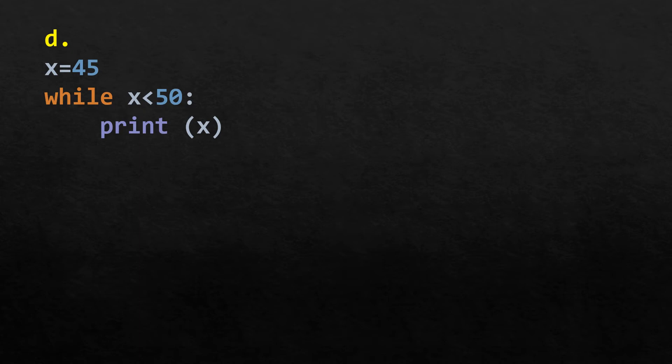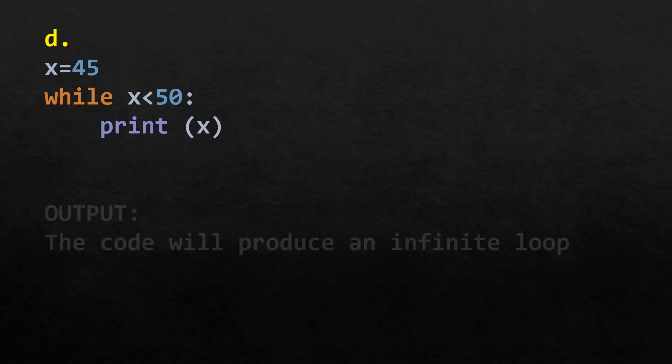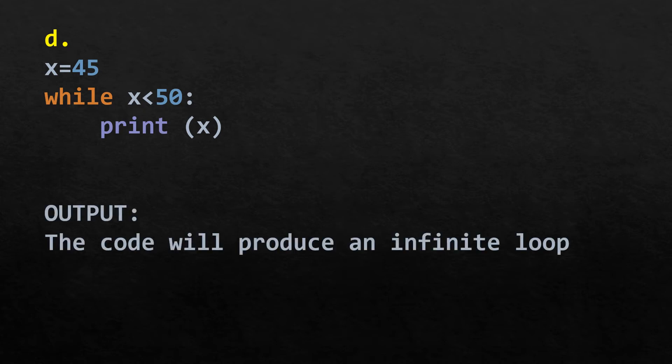In this code x is initialized with 45 and the condition is while x is less than 50, print x. However, x is never changed inside the loop, so x remains 45 and the condition stays true indefinitely. This produces an infinite loop.